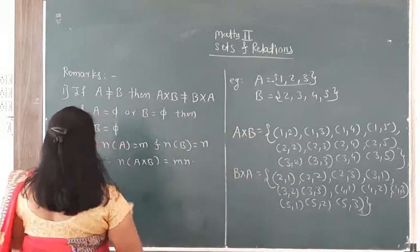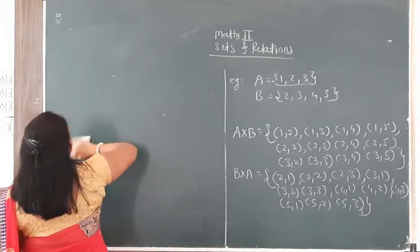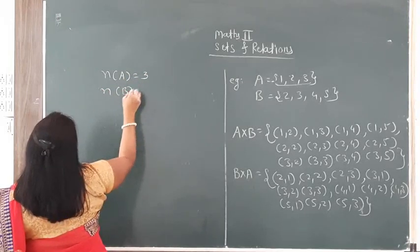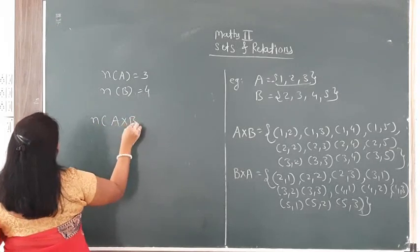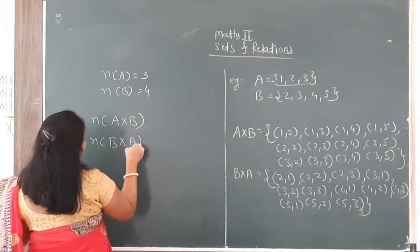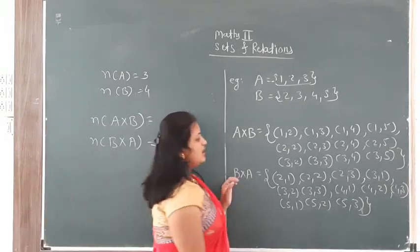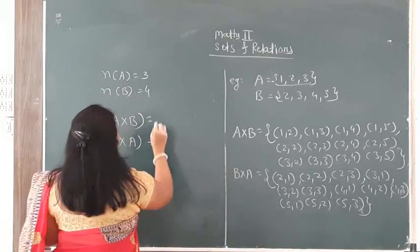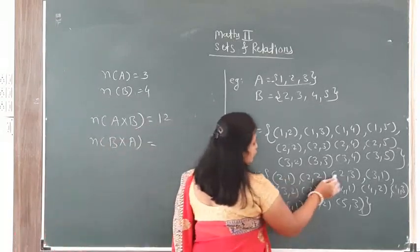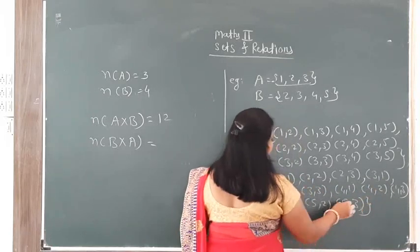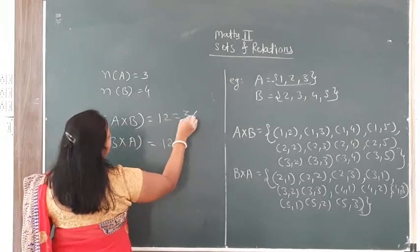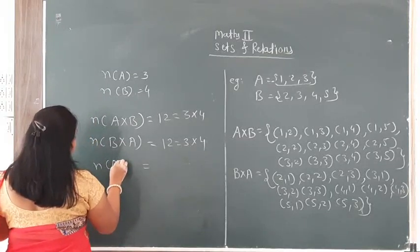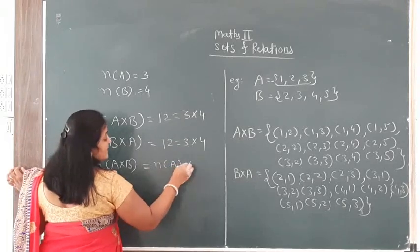Now let's check the number of elements. A set contains 3 elements, B set contains 4 elements. Counting A cross B: 1, 2, 3, 4, 5, 6, 7, 8, 9, 10, 11, 12 — that is 12 elements. Similarly B cross A also has 12 elements. That means 3 multiplied by 4 equals 12. So n(A cross B) equals n(A) multiplied by n(B).